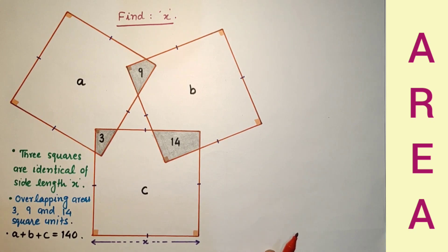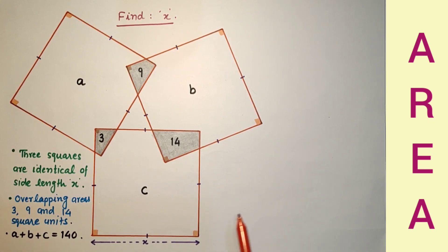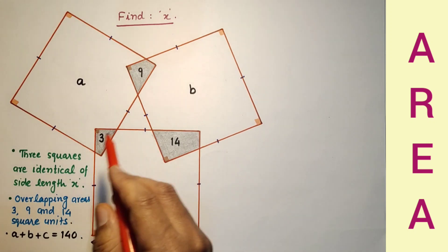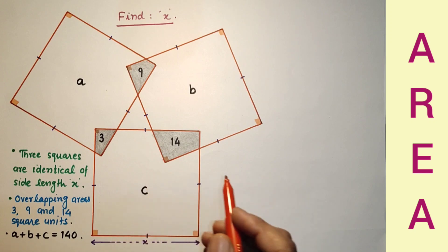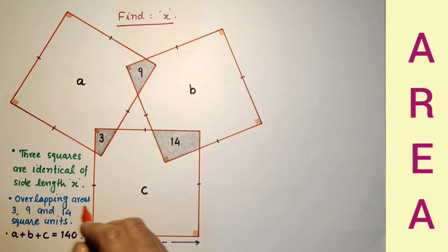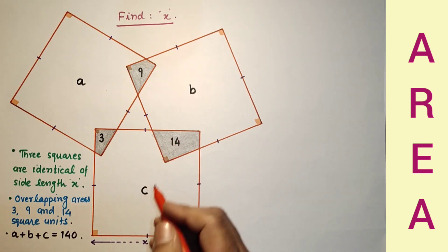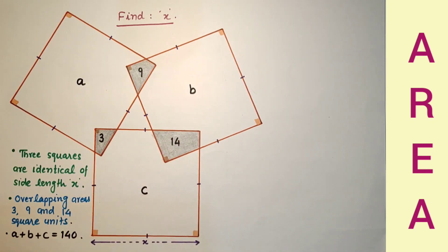In today's video, we will find the value of the side length of this square. All three squares are identical. Length of each side of the square is x units, and the squares are overlapping according to the diagram given.